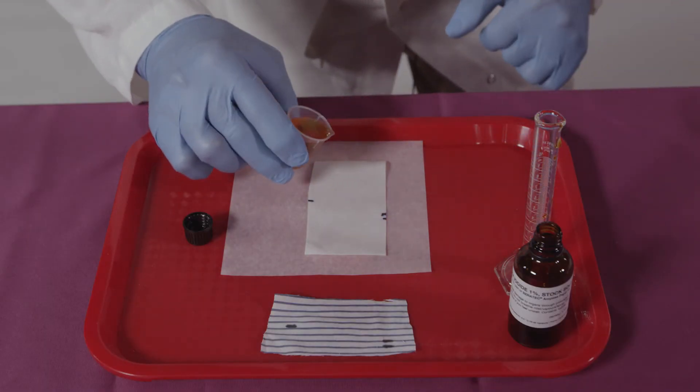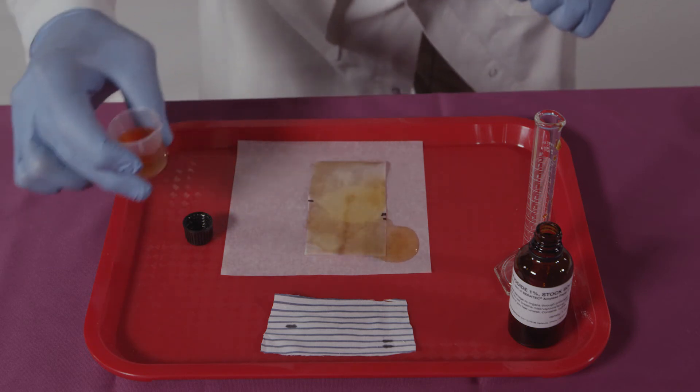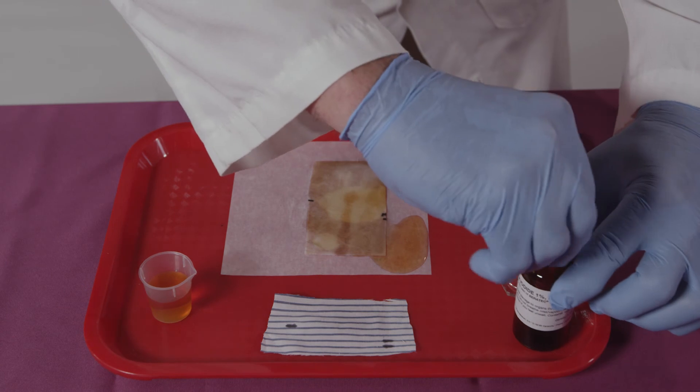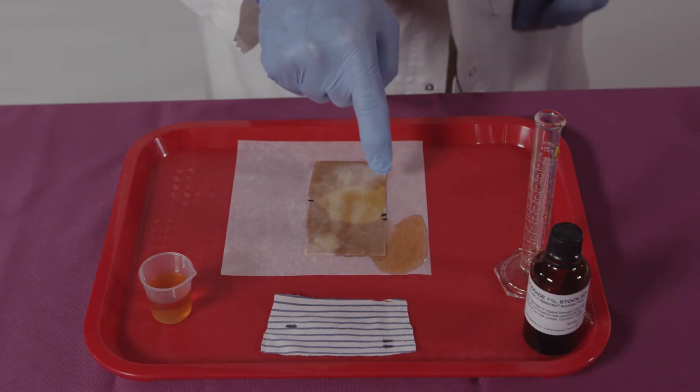After 10 minutes the working solution of iodine is poured over the paper covering the entire piece of paper in a quick motion. The solution may be applied with the optional spray bottle that is supplied.